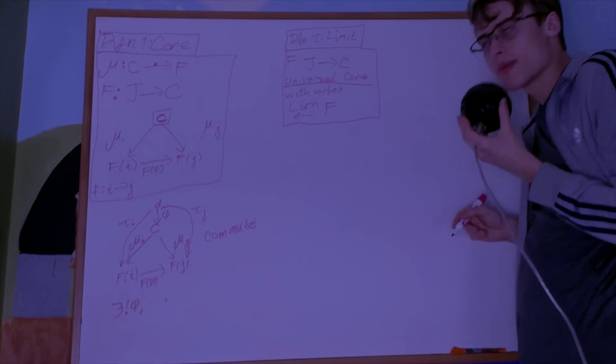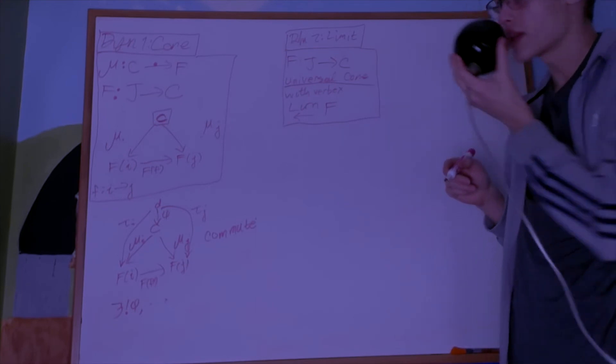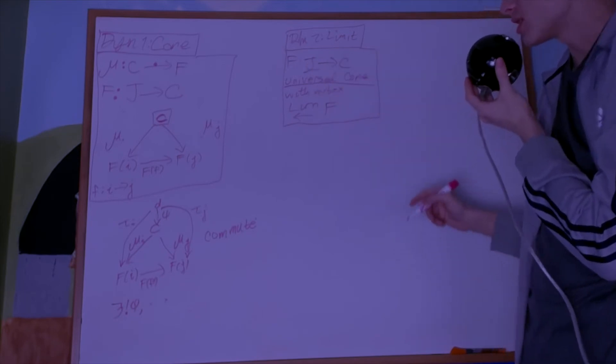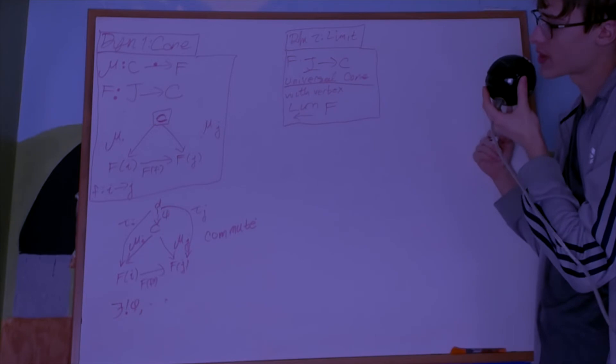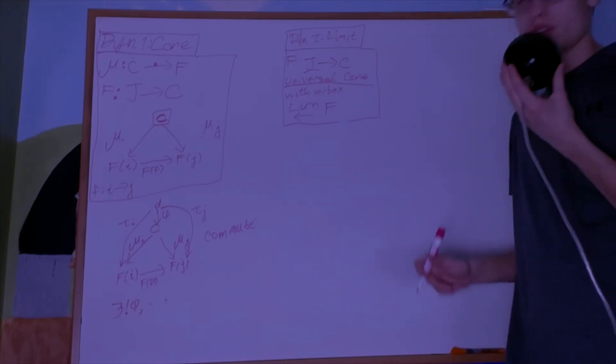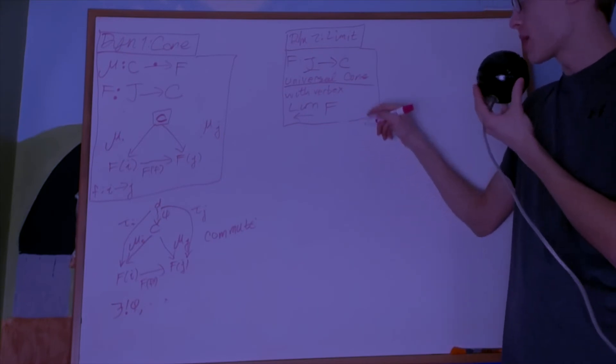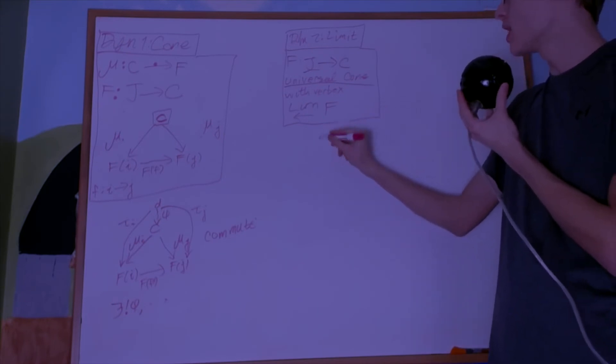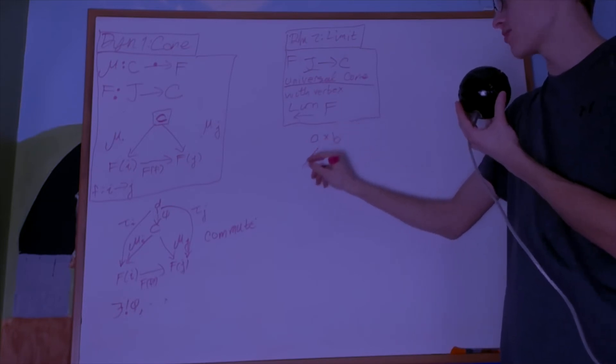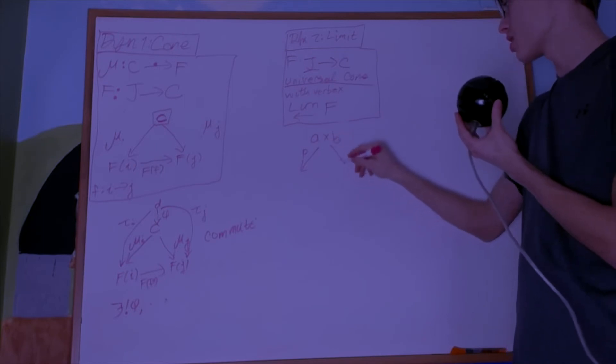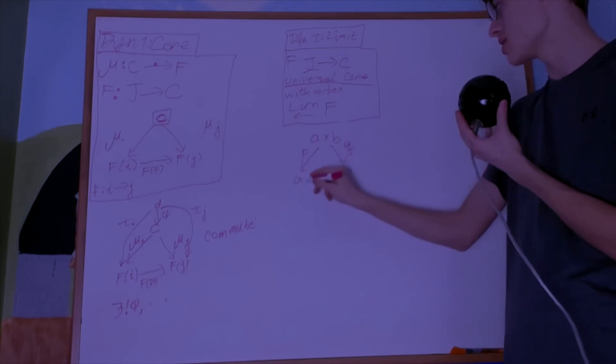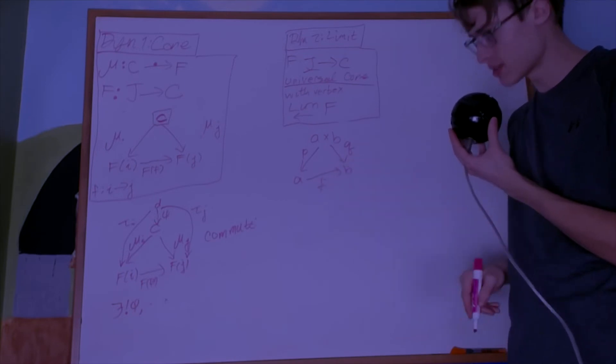Now the thing with limits is that they define a lot of interesting properties. Depending on what this J is, this gives rise to what is called a product. So a product diagram A cross B, you have two projections P and Q, one sends you to A and one sends you to B. You can go across via any morphism f.